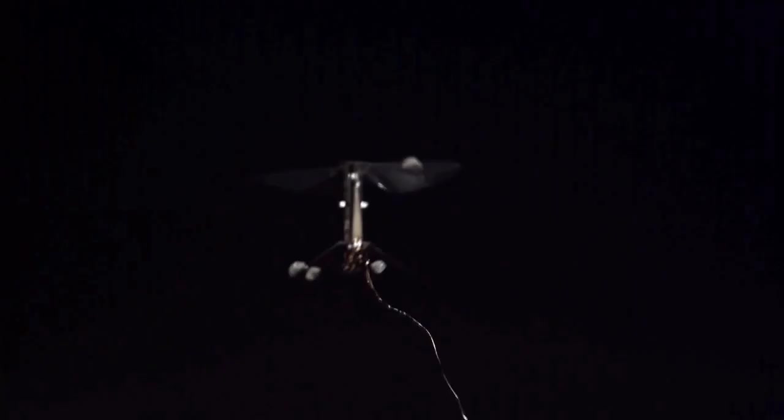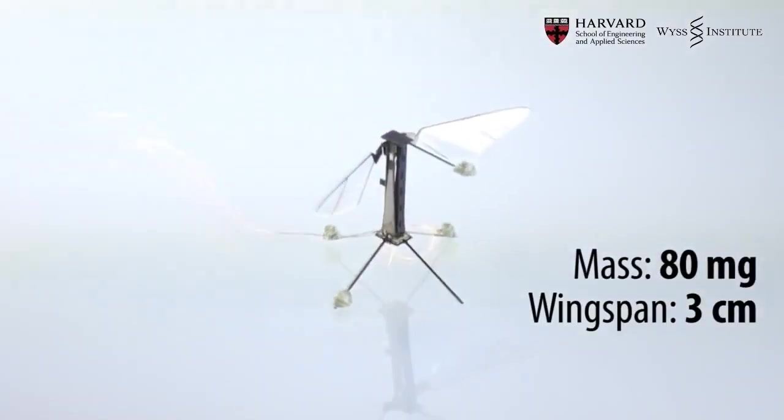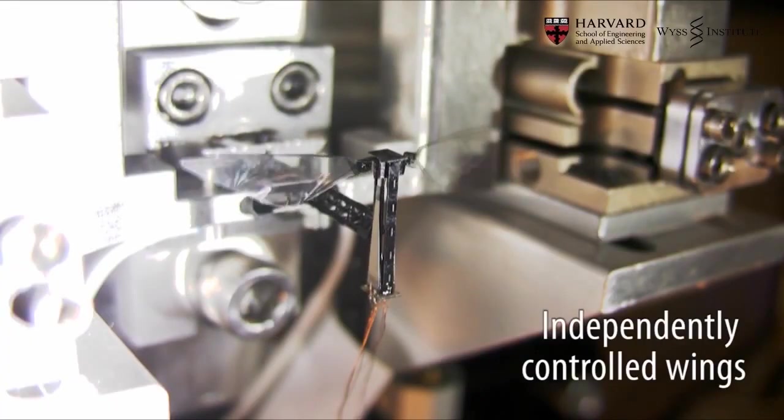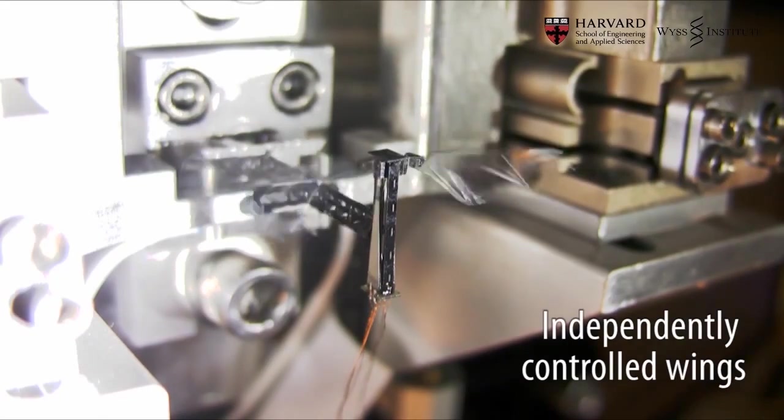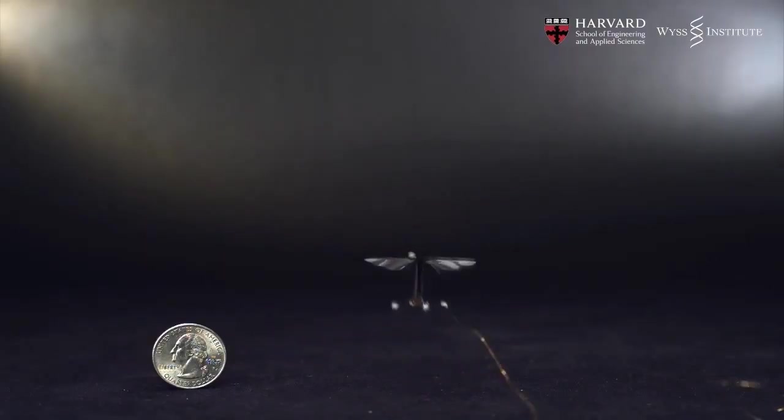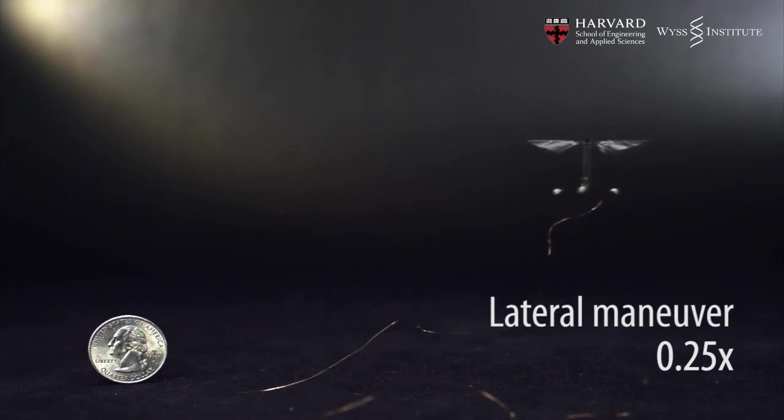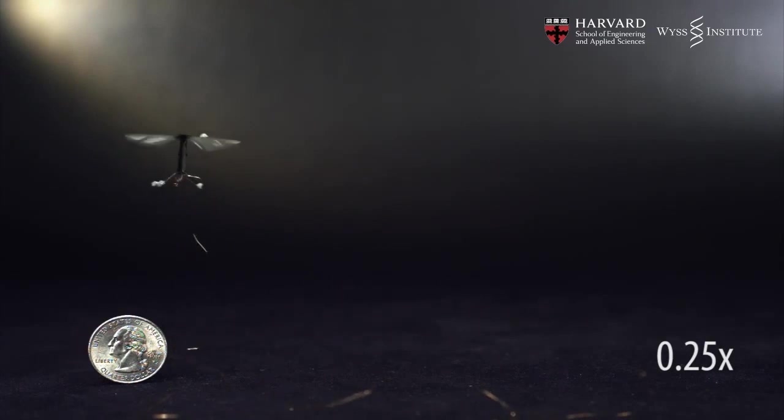It was the culmination of more than a decade of work led by researchers at the Harvard School of Engineering and Applied Sciences and the Wyss Institute for Biologically Inspired Engineering at Harvard. With submillimeter-scale anatomy and two wafer-thin wings that are nearly invisible as they flap 120 times per second, the tiny device represents the cutting edge of micromanufacturing and control systems. Piezoelectric actuators power the tiny wings, and thin plastic hinges are embedded within the carbon fiber body frame to serve as joints. A delicately balanced control system commands the rotational motions in the flapping wing robots, with each wing controlled independently in real time.